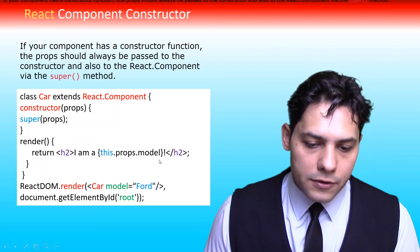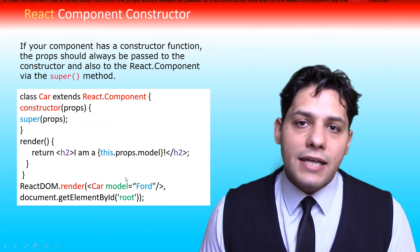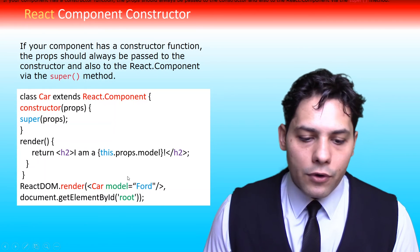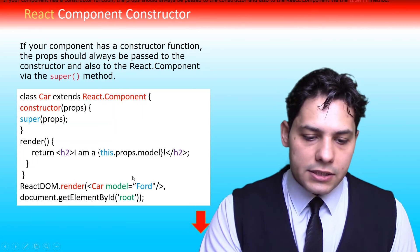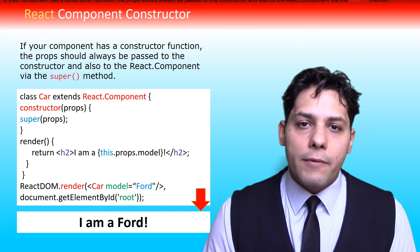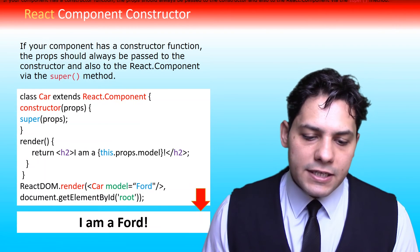And also in render function we pass an attribute to our car component for its model. Now let's see the result. Yes, I am a Ford.